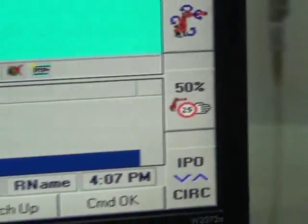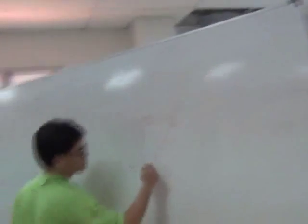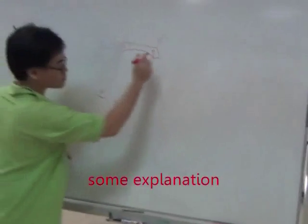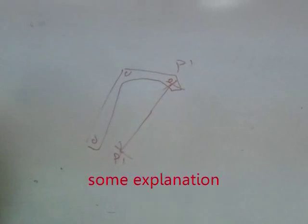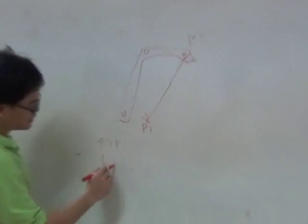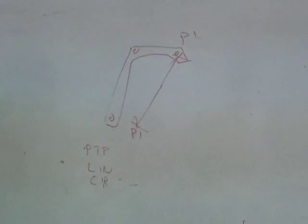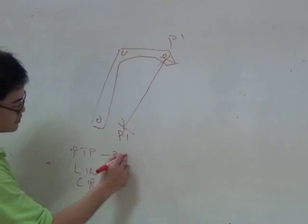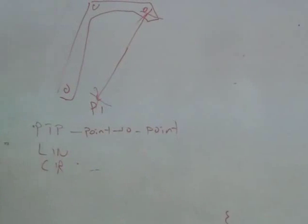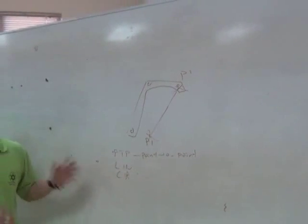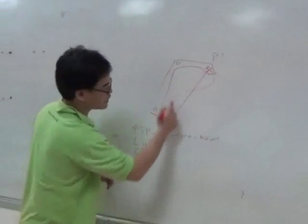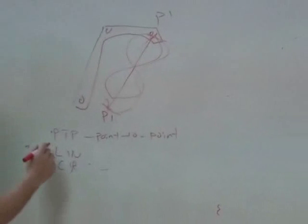You know the difference between PTP, linear, and circular — still, I want to explain. This is point one, this is point two. If you want to move from point one to point two, we have three types of motion: PTP, linear, or circular. In a PTP motion — PTP stands for point to point — it doesn't matter what the path is. As long as the start and end points are reached, that's done. It can go this way or that way, whatever it finds most efficient. So this is PTP motion.